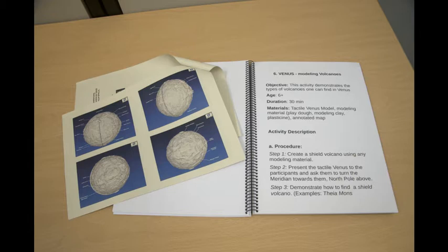Activity 6 is useful to demonstrate the types of volcanoes on Venus. It also demonstrates how to build your own shield volcano, the most characteristic on the planet, by using plasticine or any other kind of modeling material. Again, the document with snapshots of the model can help to locate some of these volcanoes.